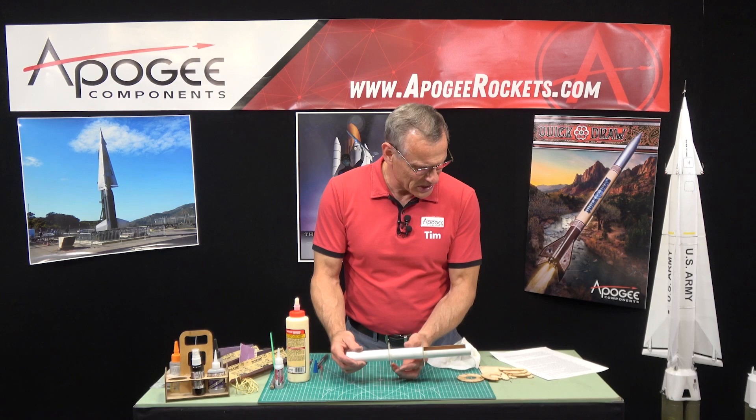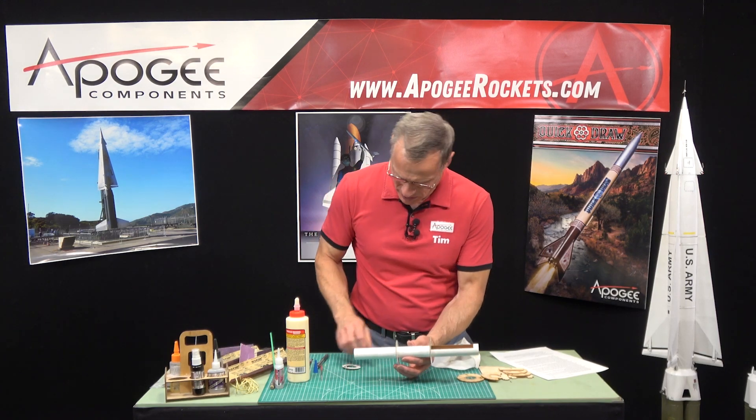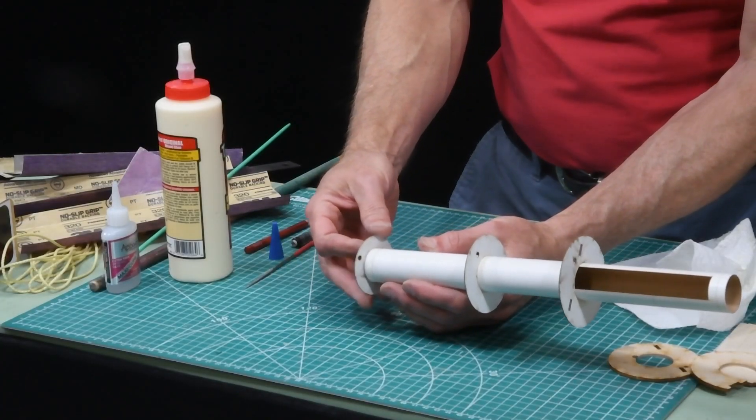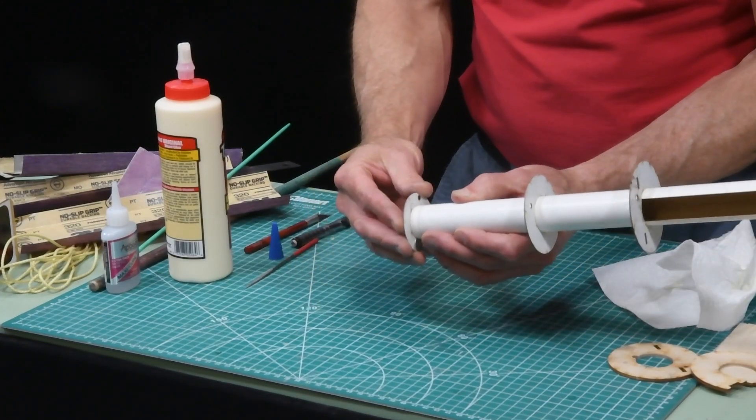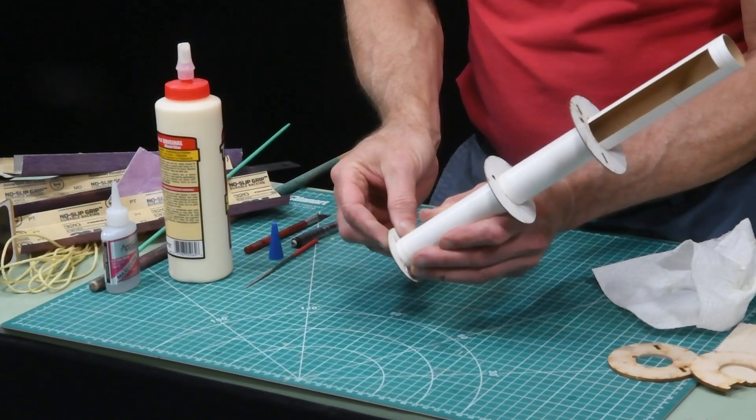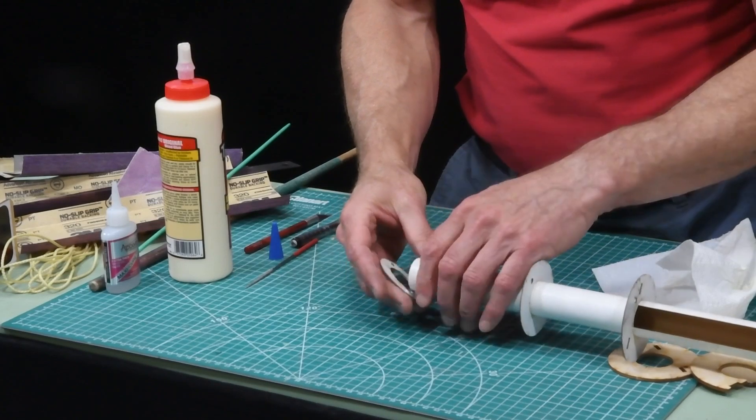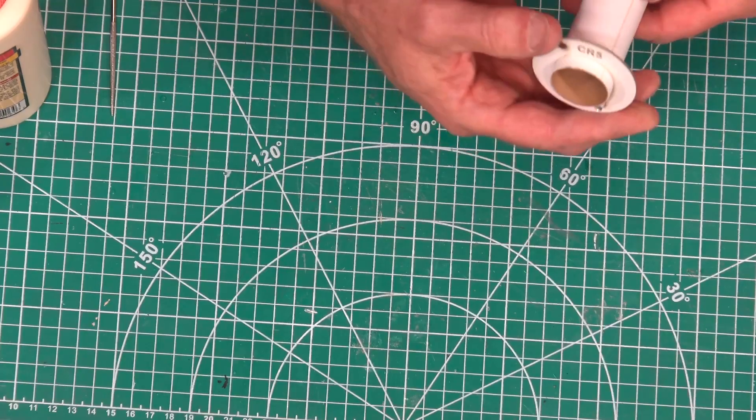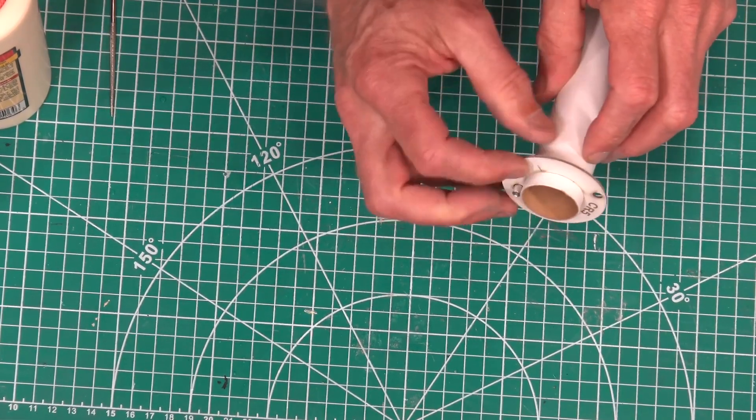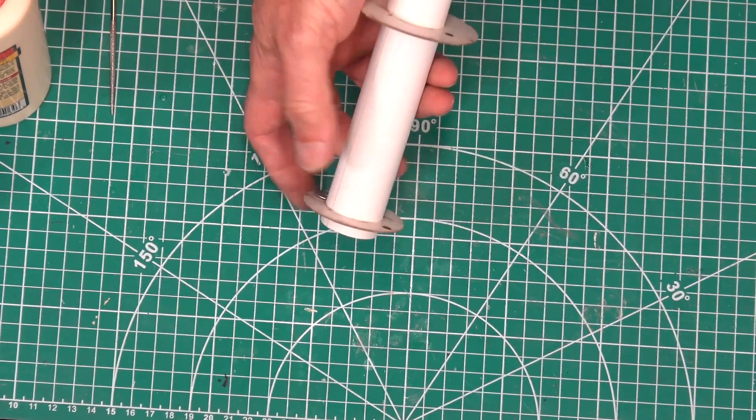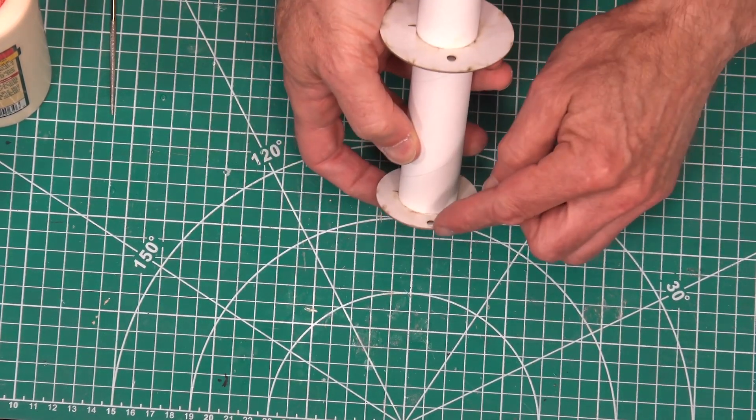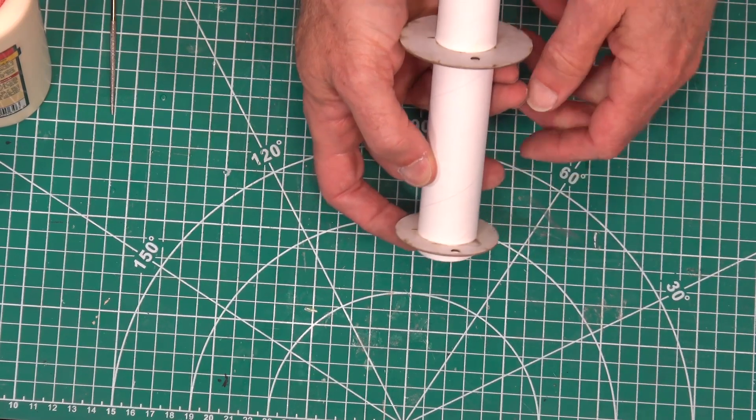Now we're going to install CR5 the same way as CR3 and 4. Again, the engraving goes down, so this is going to be the bottom of the rocket. Glue the ring into place just forward of the mark using wood glue. I'm trying to find my little notch right there, it's going to be lined up with that. And again, that hole here should line up with that hole there.